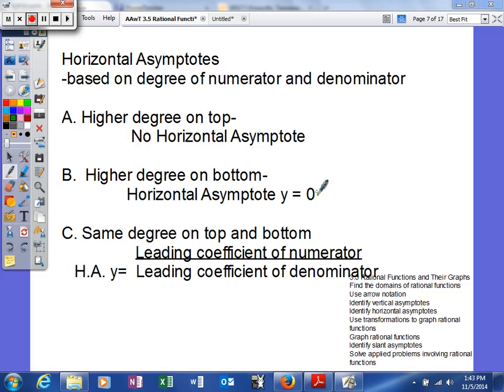It will open up the opportunity of having what they call a slant asymptote, which we'll be looking at later. But right now, no horizontal asymptote. If you have a higher degree on the bottom of your rational function, then your horizontal asymptote is the equation y equals zero.